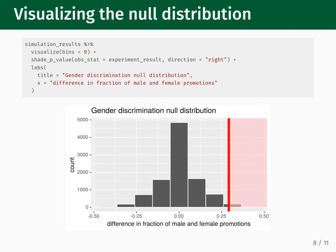We pipe our null distribution into the visualize function, which sets up a ggplot2 visualization. We can still add extra details to the plot in the usual way. The function shade_p_value can be used to add a line representing the observed experimental result, set using obs_stat equals experiment_result. The input direction equals right shades the region of the null distribution with outcomes more extreme than the experiment — simulations where an even greater number of men were promoted over women. From this distribution we can see, just as in the playing card simulation, that the observed difference in proportions is not a common result.